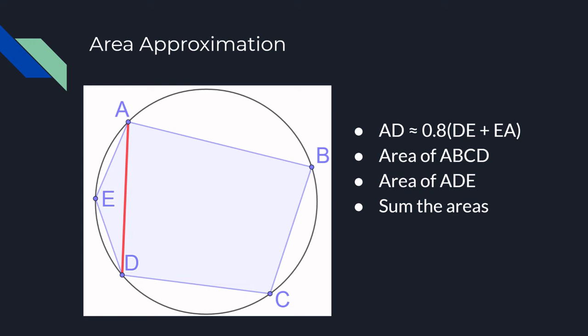In order to find the approximate area, we first split the pentagon into a cyclic quadrilateral and triangle with a diagonal such that the sum of the triangle's two sides that are on the pentagon is minimized, as you can see in the diagram where AED is the triangle.